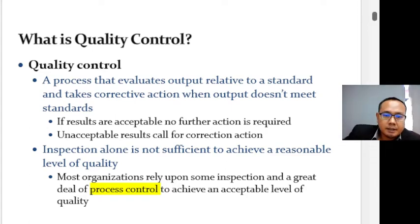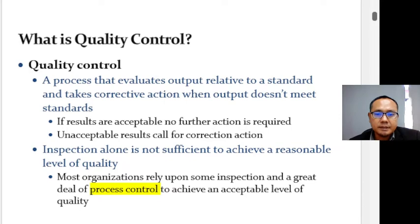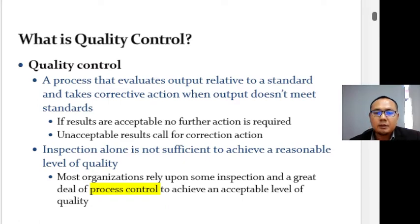This chapter covers quality control. The purpose of quality control is to ensure that processes are performing in an acceptable manner. Companies accomplish this by monitoring process output using statistical techniques. Quality control is a process that measures output relative to a standard and takes corrective action when output does not meet that standard. If results are acceptable, no further action is required.